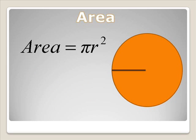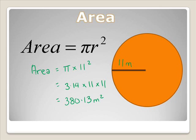Let's look at another example. In this example we have a radius of 11m. So we'll substitute in the values. So the area equals pi times 11 times 11. This equals 3.14 times 11 times 11, which equals 380.13m squared.